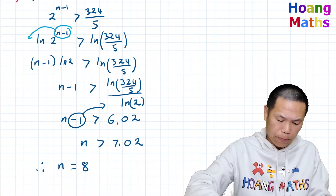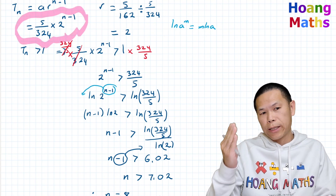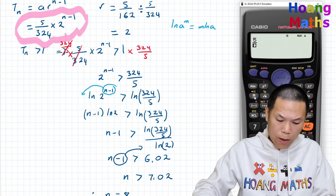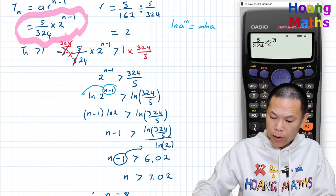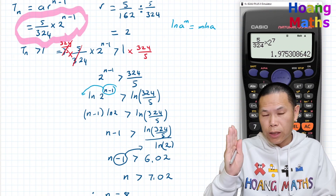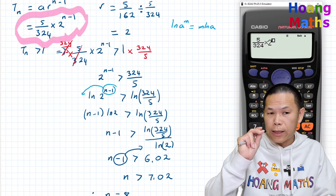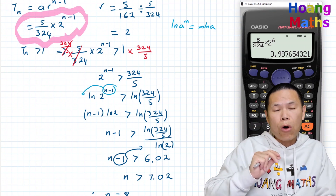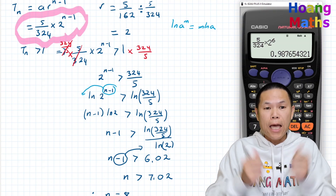Let's verify. Substituting n = 8: (5/324) × 2^(8−1) = (5/324) × 2^7, which gives approximately 1.97 — just above one. Trying n = 7: (5/324) × 2^6 gives a value below one. So the first term greater than one is when n equals 8.